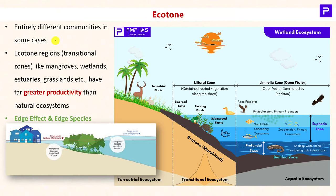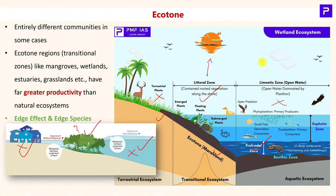In some Ecotones, the species present may be very different from the surrounding communities. For example, mangroves form an Ecotone between an aquatic ecosystem and a terrestrial ecosystem, and mangrove species are available only in the Ecotone region — not in either the aquatic or terrestrial ecosystem. Since an Ecotone is a zone of tension, it has greater biodiversity and productivity compared to surrounding ecosystems. For example, marshland as an Ecotone has productivity much higher than either the adjacent aquatic or terrestrial ecosystem.